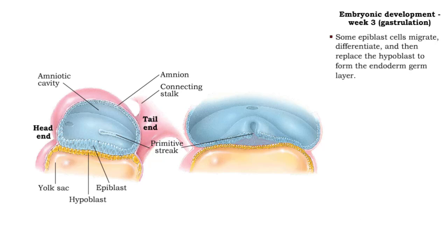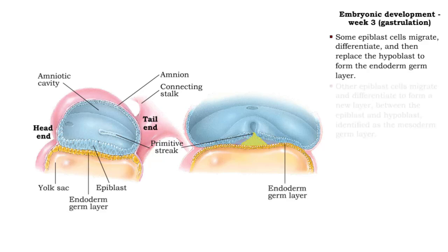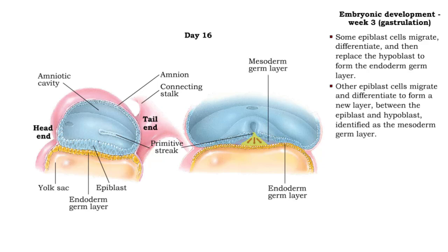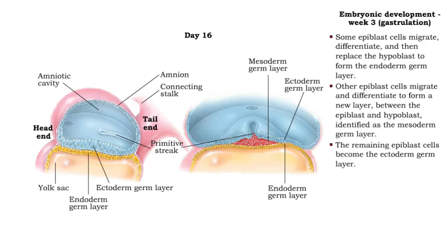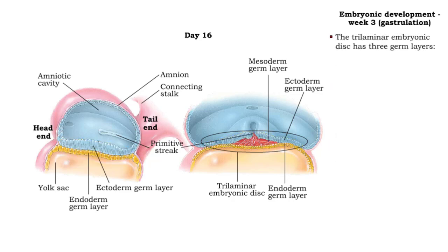Some epiblast cells migrate, differentiate, and then replace the hypoblast to form the endoderm germ layer. Other epiblast cells migrate and differentiate to form a new layer between the epiblast and hypoblast, identified as the mesoderm germ layer. The remaining epiblast cells become the ectoderm germ layer. The result of gastrulation is the formation of the trilaminar embryonic disc, consisting of the three germ layers.